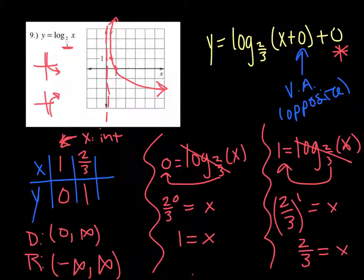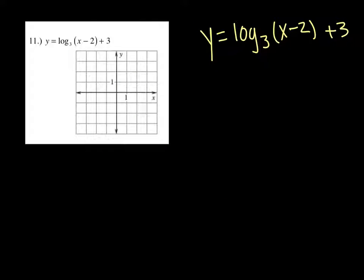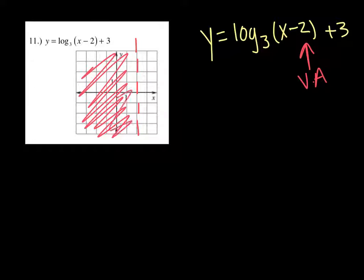I'm going to do number 11 with you, and then you need to try 8 and 10. For number 11, this one is written in that form that I rewrote the other one in. x - 2, vertical asymptote, opposite. So it's going to be at positive 2. So there should be nothing on the left-hand side of this graph. Everything is going to be on the right-hand side.